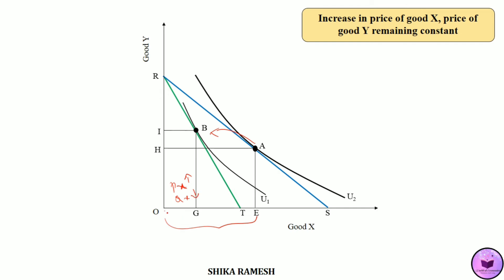Here also we can see the law of demand being operational — other factors remaining the same, when the price of good X increased, quantity demanded of good X decreased. When the price of good X increased, the consumer has given up EG amount of good X and has consumed HI amount of good Y. This is because of the price effect.